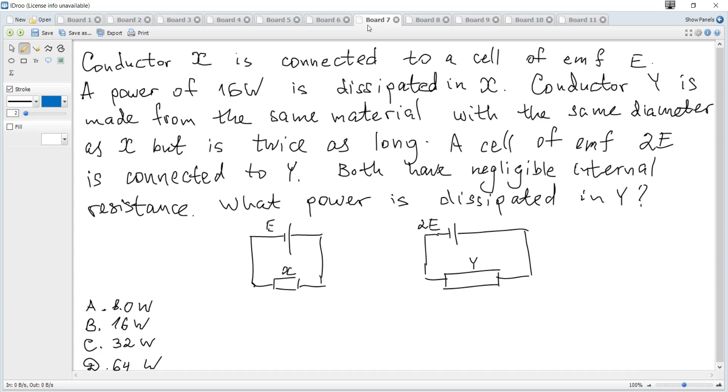Conductor X is connected to a cell of EMF E. A power of 16 watts is dissipated in X. Conductor Y is made from the same material with the same diameter as X but is twice as long. A cell of EMF 2E is connected to Y. Both have negligible internal resistance. What power is dissipated in Y?